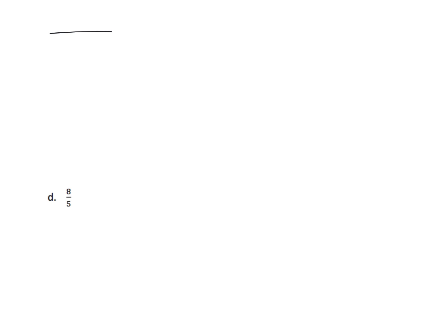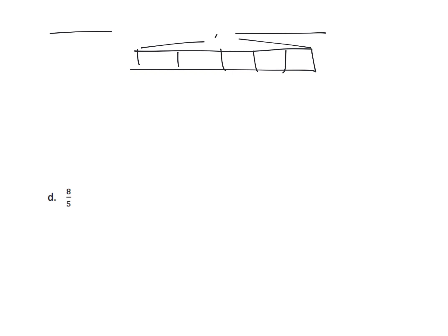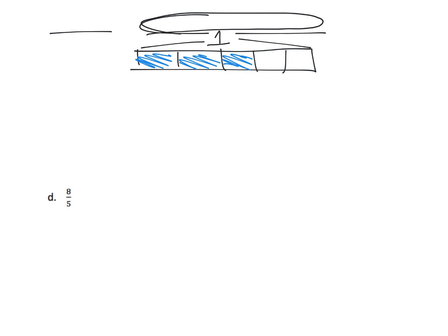Now we're taking away some of the scaffolding — we're supposed to draw the tape diagram and then record a couple of things. For three-fifths, here's our one whole divided into five pieces, and we shade in three of those five pieces. As a decomposition into unit fractions, three-fifths is one-fifth plus one-fifth plus one-fifth. And if we record that as a multiplication, that's three times one-fifth.